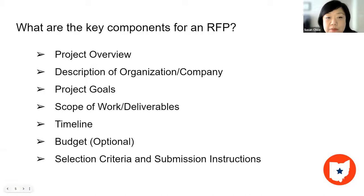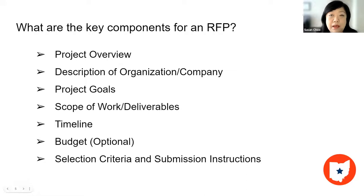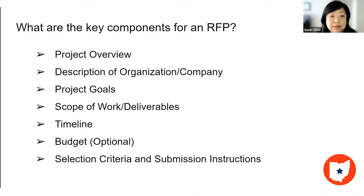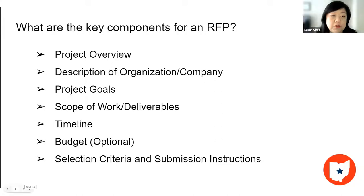I'm sure everyone has worked on an RFP and seen the general rubric. Project overview — you want to give one to three sentences about what the project is. Then a description of your organization: who you are, what you do, what's important to you, and who your target audience is — low-income clients, or maybe you're part of a particular niche within a nonprofit. Because this really is like a marriage or dating, they have to know where you're coming from in order to get a sense of whether this is a relationship they want to engage in.